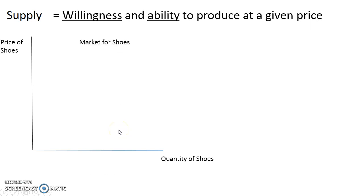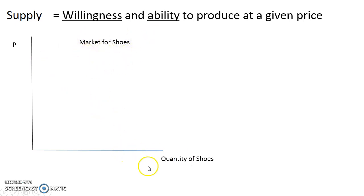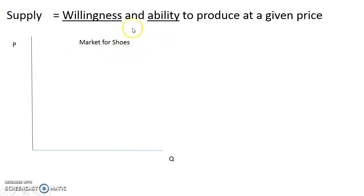In this case we're dealing with the market for shoes. I have it labeled as 'price of shoes,' but because I've given a title I can simplify that to just 'price.' Similarly, I don't need to write 'quantity of shoes' — I can label it just Q. It's really important to have a title. A graph is not a graph unless it's properly labeled, so always take the time to include the title.